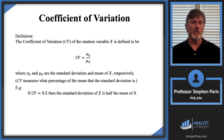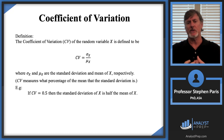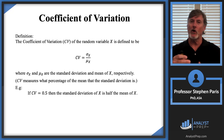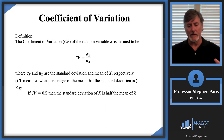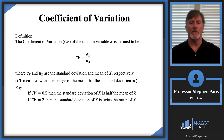For example, if you have a coefficient of variation of one half, then the standard deviation is one half of what the mean is. So if I gave you the mean and the coefficient of variation, you have a bigger picture idea. The coefficient of variation by itself gives you a general idea of what the spread of the data looks like. If the coefficient of variation is 0.5, the standard deviation is half the mean; if it's two, the standard deviation is twice the mean.